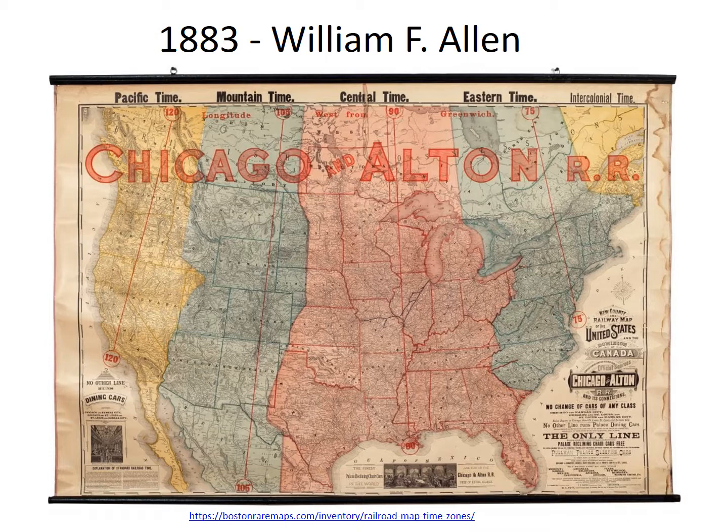This shows one of the earliest maps of the United States to show the standard time zones. William F. Allen was the General Time Convention Secretary and argued that North American railroads should adopt a five-zone standard similar to the one in use today. On October 11, 1883, the heads of the major railroads met in Chicago at the Grand Pacific Hotel and agreed to adopt Allen's proposed system.